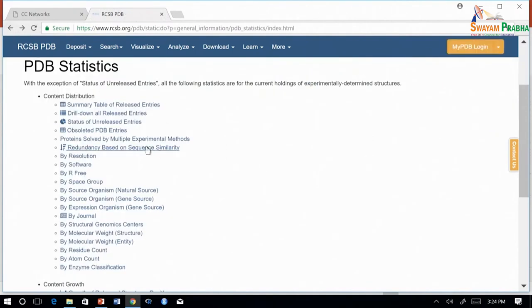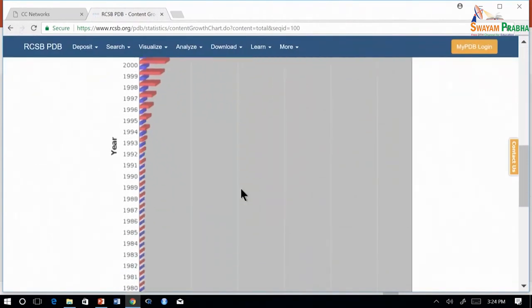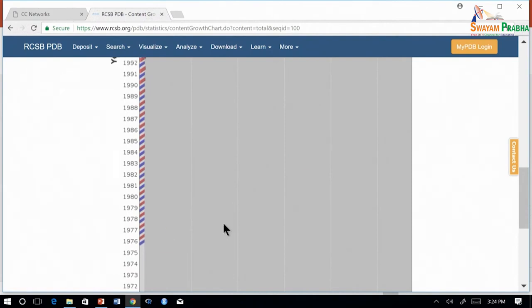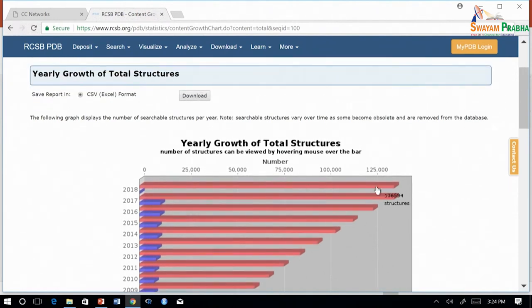To explore further, you can see the data by molecular weight, by residue count, or by resolution. All these data is available for exploration and further study. PDB also gives statistics by content growth. This shows how the database has grown over time. Statistics have been kept every year since 1976. Let us see the statistics here. The records start from 1976. As you can see, the amount of data being deposited in PDB has grown over the years.